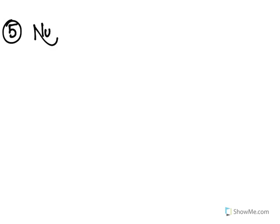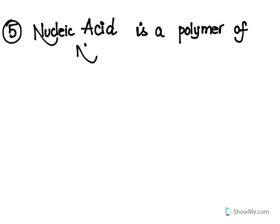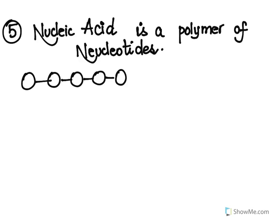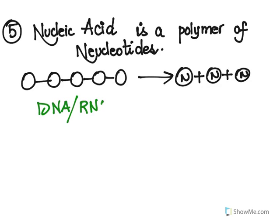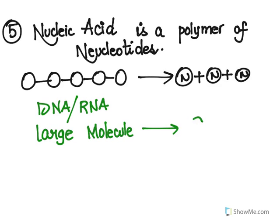Number five is nucleic acid to nucleotides. A nucleic acid is a polymer of nucleotides. The nucleic acid is a bigger molecule like DNA or RNA, which is going to break up to give us nucleotides. So DNA or RNA is a large molecule giving us smaller molecules, hence this process is catabolism.